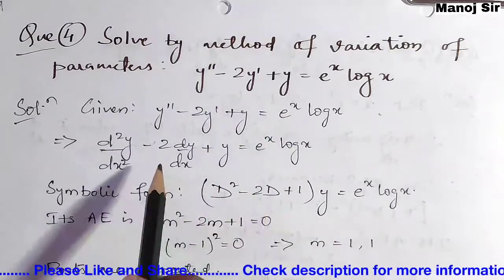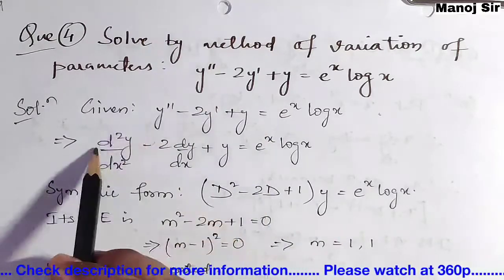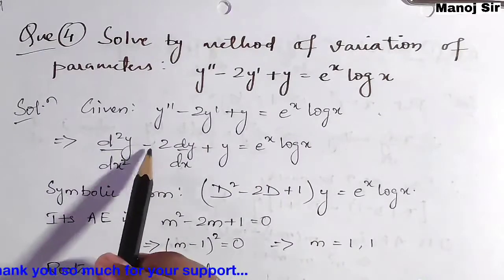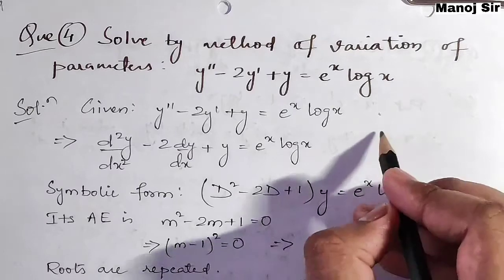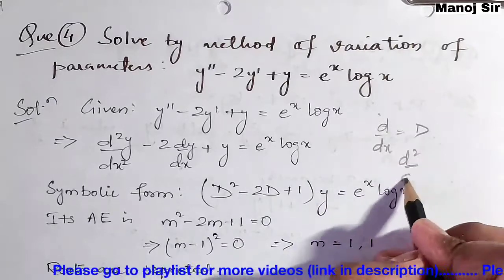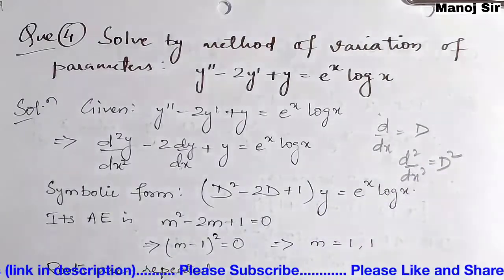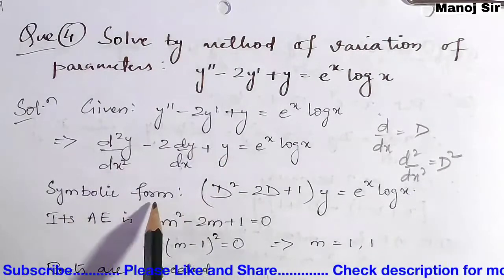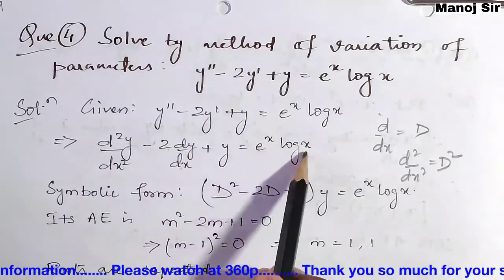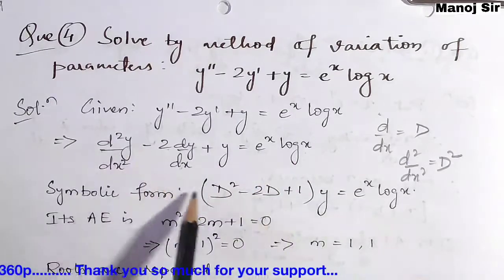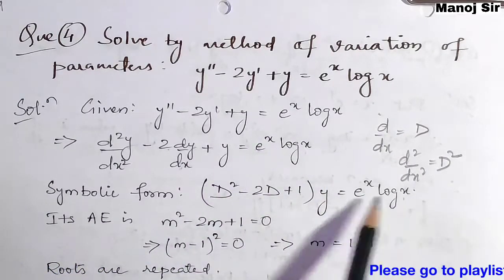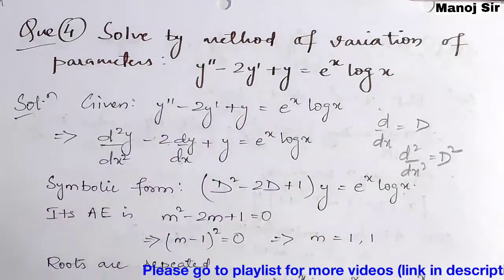First we write this equation in symbolic form. Since y double dash means d²y/dx² and y dash means dy/dx, the equation becomes d²y/dx² minus 2·dy/dx plus y equals e^x·log x. Using capital D for d/dx and D² for d²/dx², the symbolic form is (D² - 2D + 1)y = e^x·log x.